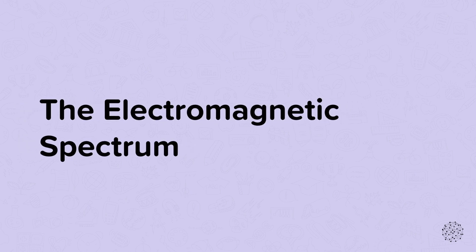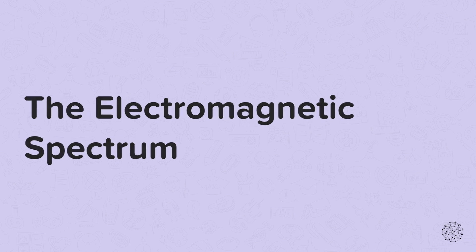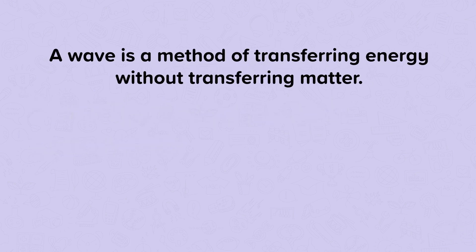The electromagnetic spectrum. In this nugget, we're going to look at the electromagnetic spectrum, which is a collection of waves. But first, let's think about what a wave is. A wave is a method of transmitting energy without transmitting matter.